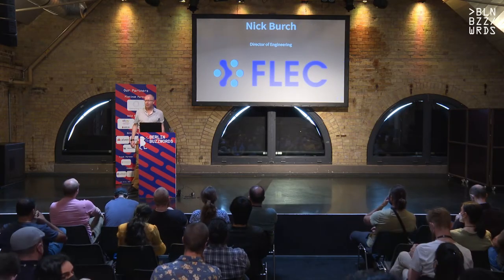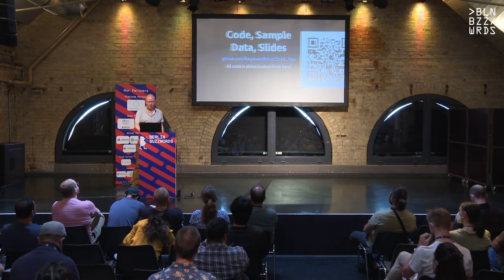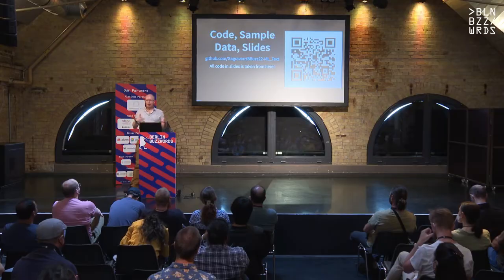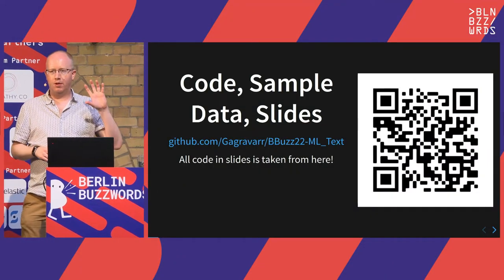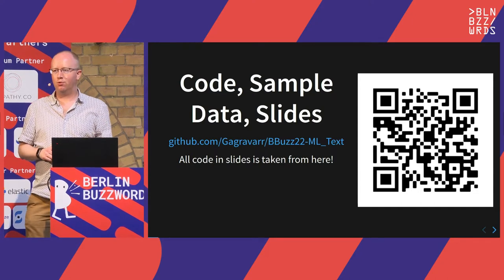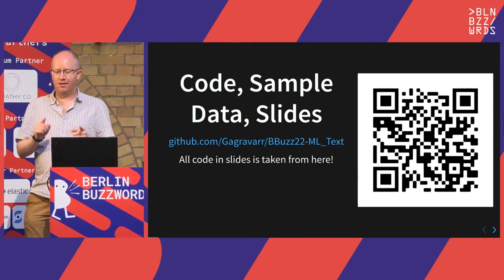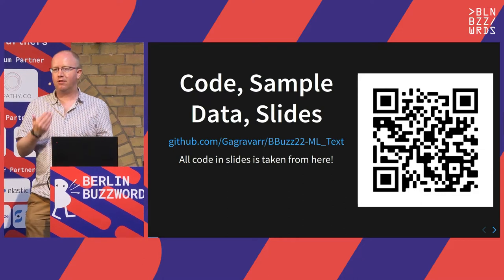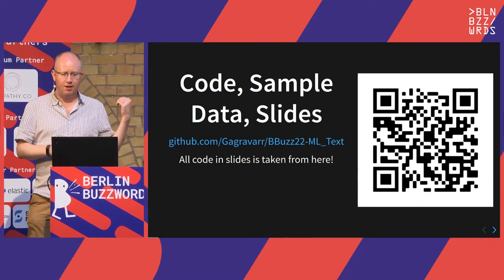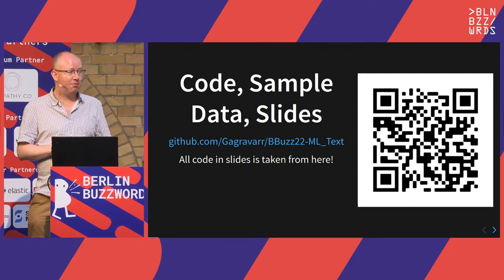I'm Nick Birch, Director of Engineering at a company called Fleck in the UK. As I go through my talk, I'm going to be putting up snippets of code. Most of them are too small to read, especially at the back, but fear not — every bit of code on my slides is also on GitHub, so are the slides. If there's any bits you're interested in and I run a bit too fast over, you can get it later. Also, if you spot any bugs in my code, pull requests welcome.